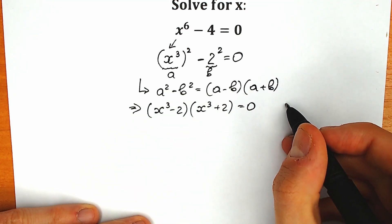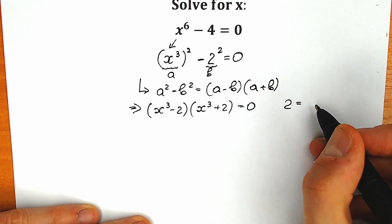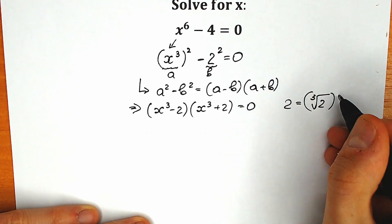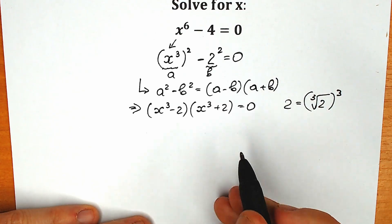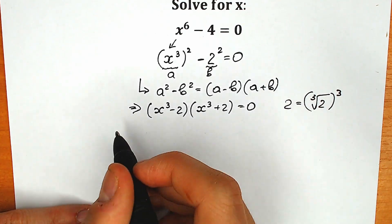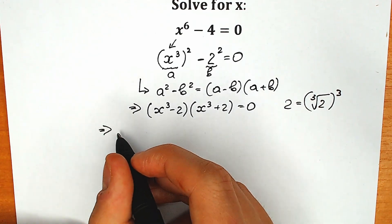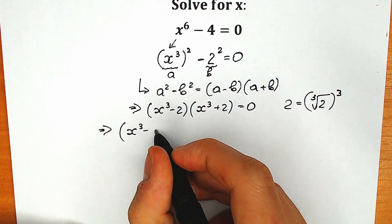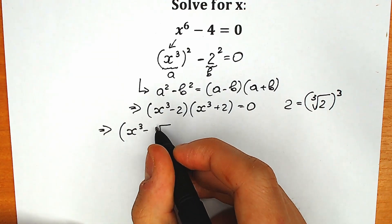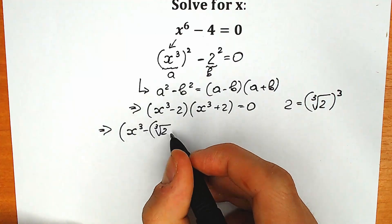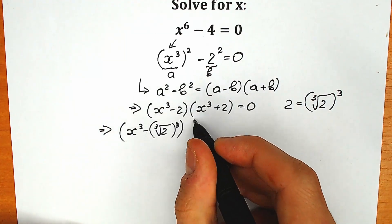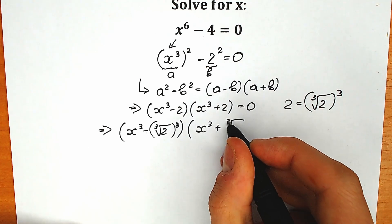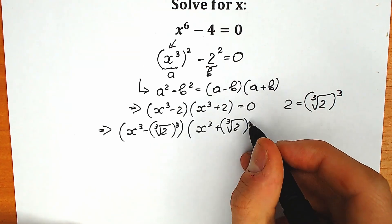First of all, instead of the 2, I'm going to write this expression: the cube root of 2 raised to the third power. This is a correct expression. So instead of the 2, I'm going to write cube root of 2 to the third power. So we have x cubed minus cube root of 2 to the third power, times x cubed plus cube root of 2 to the third power.